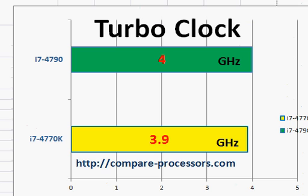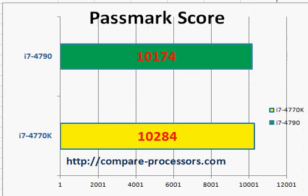The same thing applies to the turbo clock — the 4790 is 100 megahertz higher. Let's take a look at their Passmark score, which is the average benchmark score reported by users. You will see that the 4790 is rated slightly lower, and the basic reason is that many of the users uploading their scores have overclocked these processors. But if you do not overclock and run them at the same base and turbo clock frequency, then the 4790 would potentially have a higher Passmark score than the 4770K.